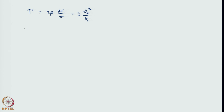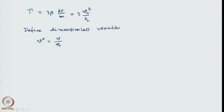We define dimensionless variables. Normally we write it as x-star, but to avoid tediousness in writing we use different letters. For velocity, the dimensionless velocity is the true velocity divided by the characteristic velocity — we call it U. When we say U, it means it is the dimensionless velocity v/V_c.